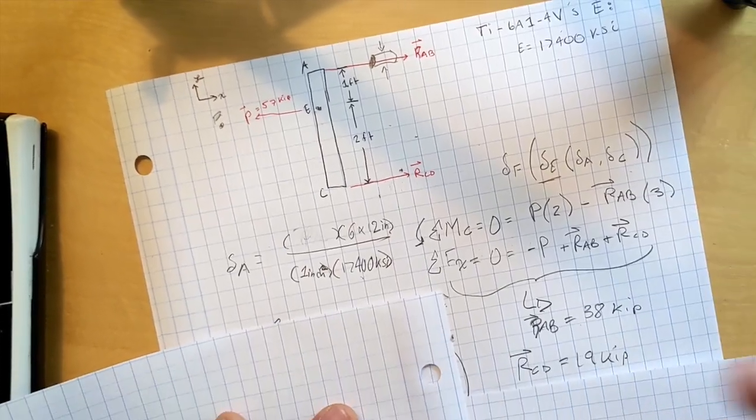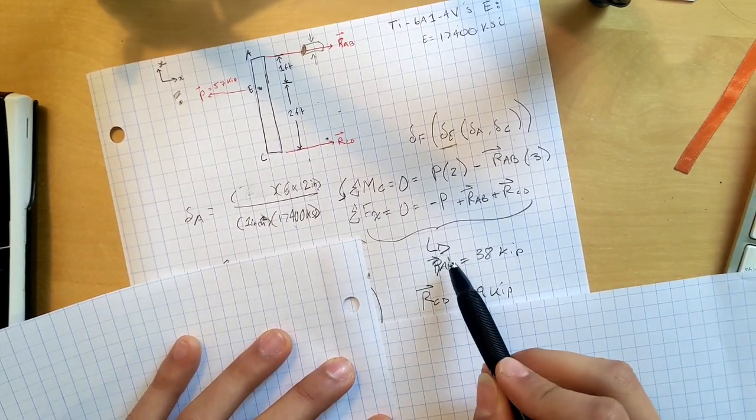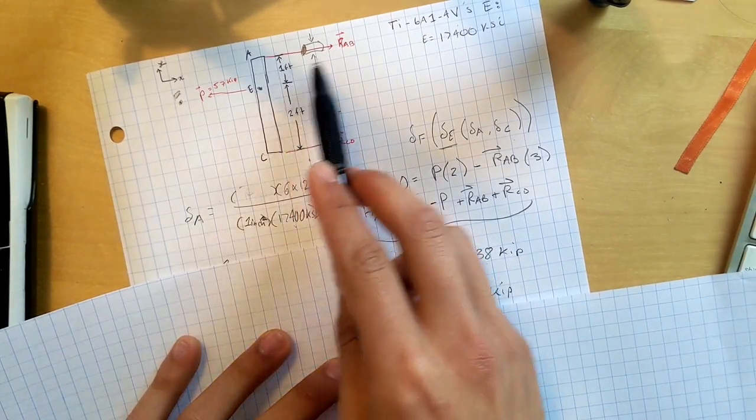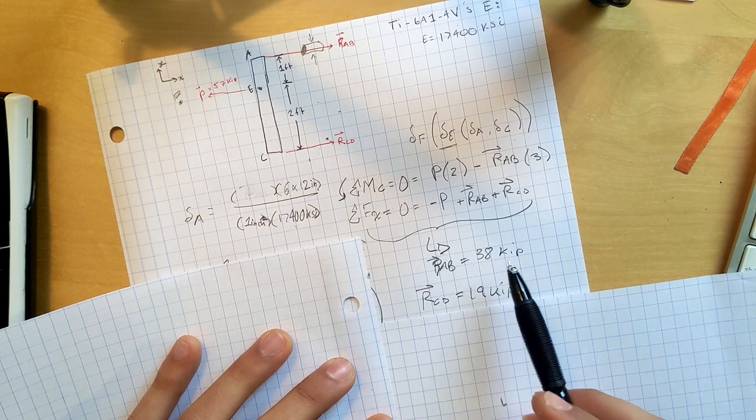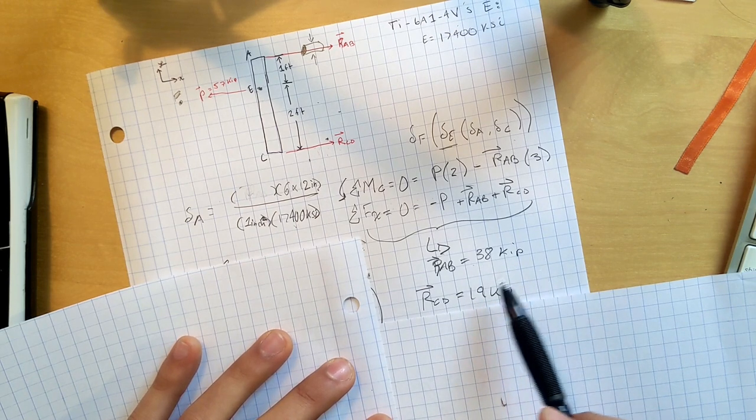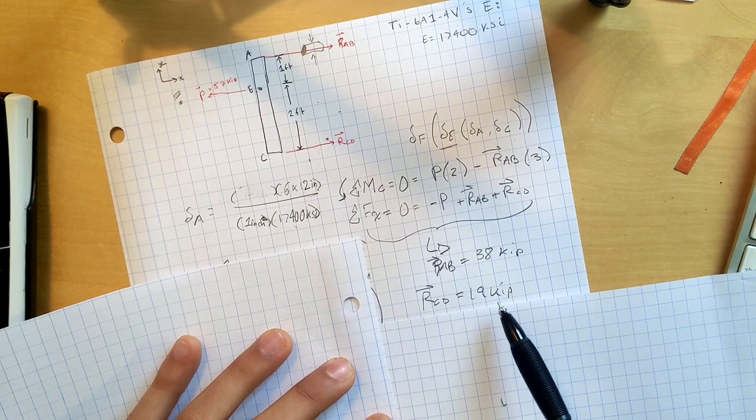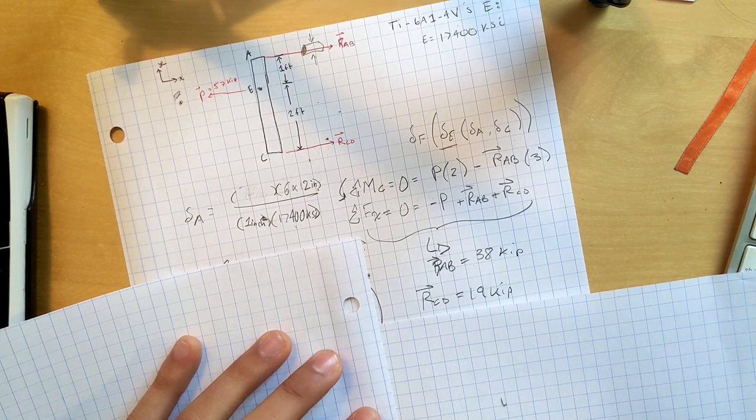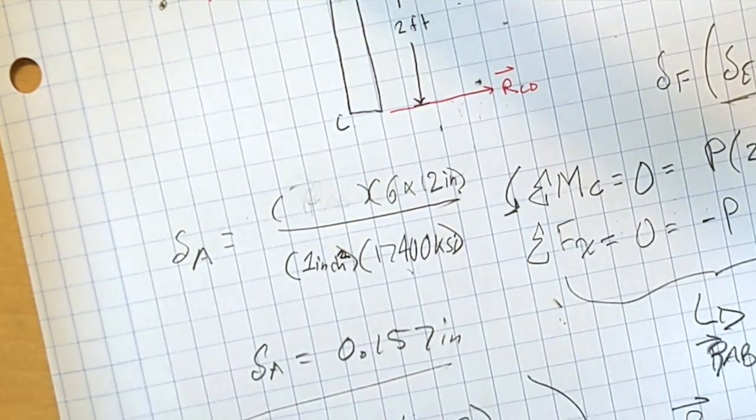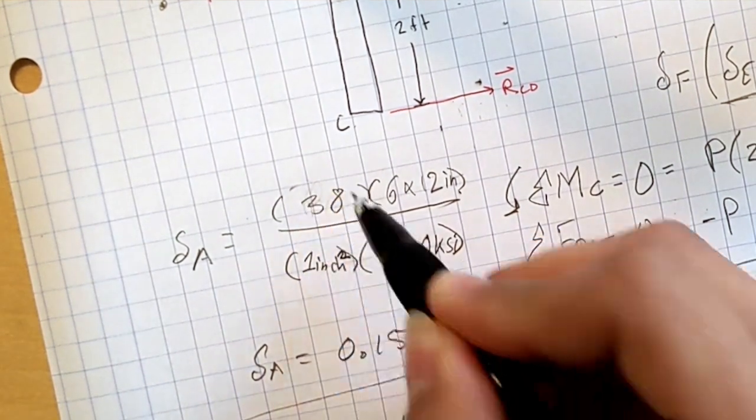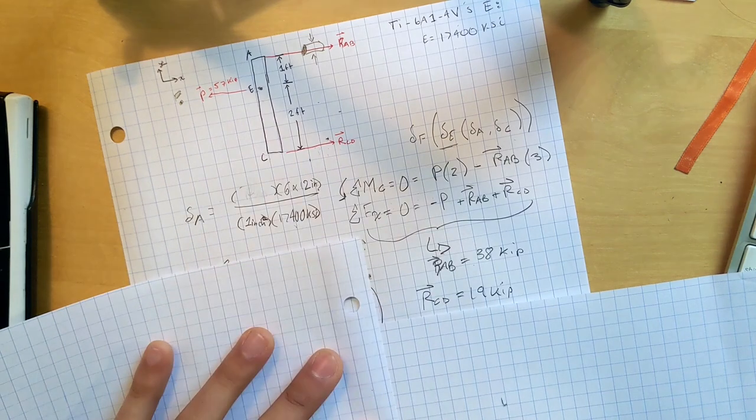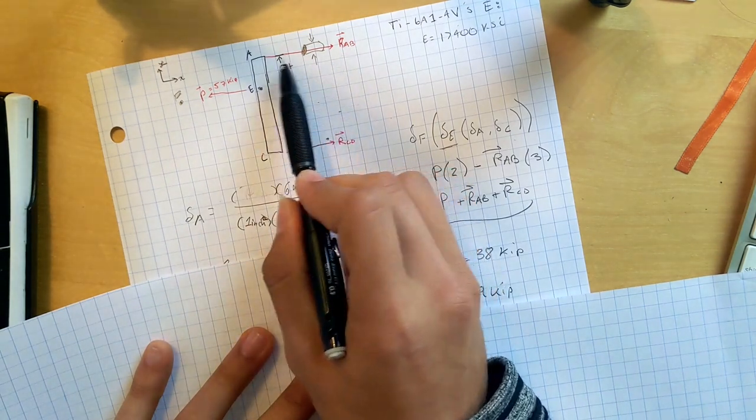So once we do some rearranging, we can discover that R_AB top boy. It's 38,000 pounds. And R_CD is 19,000 pounds. So now we know the change in length of point A, or the bar A, the bar AB.